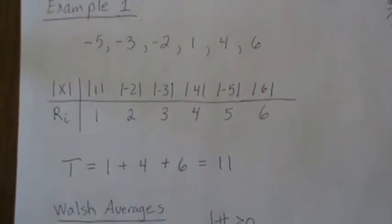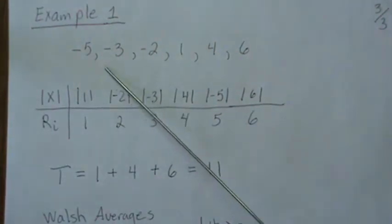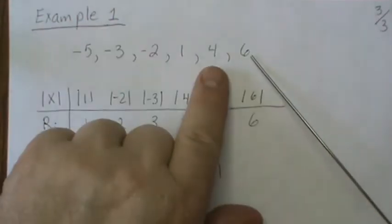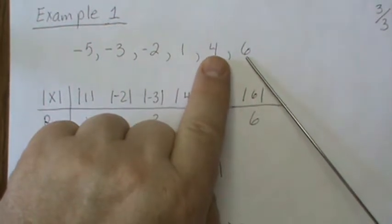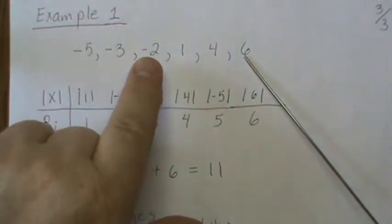But now let's do it with the Walsh averages. Here are our values. We're going to take the Walsh averages like this: we're going to take four and six, one and six, two and six.